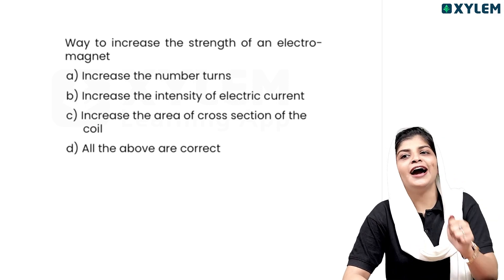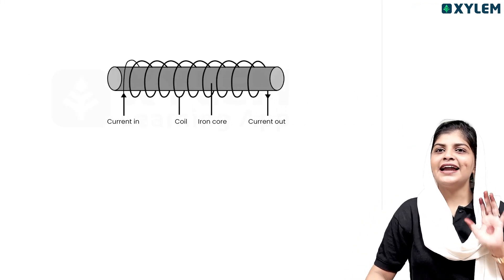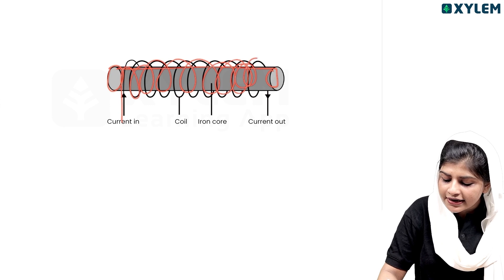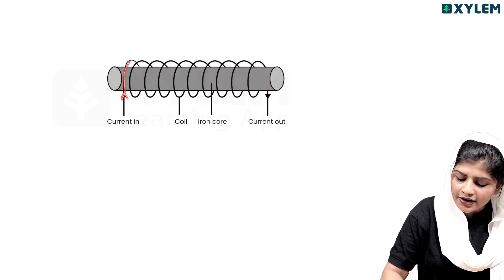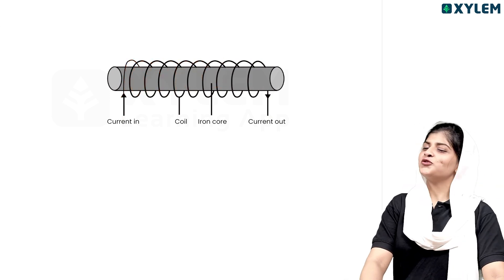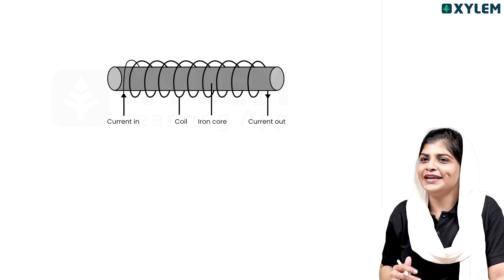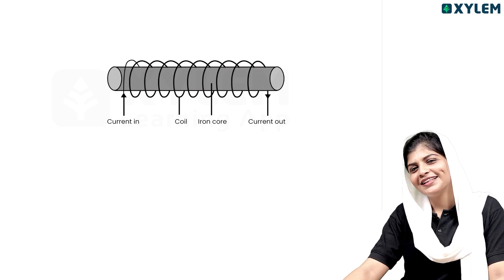If you want to use an electromagnet, you can use a soft iron piece. This is called an electromagnet and it is also a temporary magnet. Bye, thank you so much.